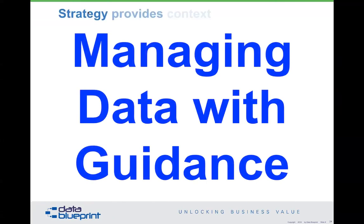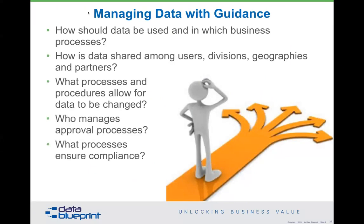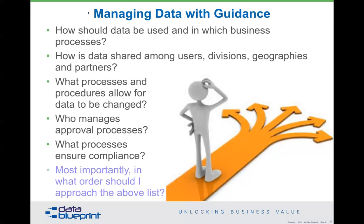When you look at data governance issues — how should data be used, which data is shared, which processes allow for change, who approves what — those are not the most important questions. The most important question is: in what order should I approach these questions? Because we can't figure them all out at once. I can't tell you how many organizations I've worked with where smart people sit around in meetings trying to plan out something they aren't familiar with — it does not provide results. And the idea that you can predict what the future looks like is problematic.